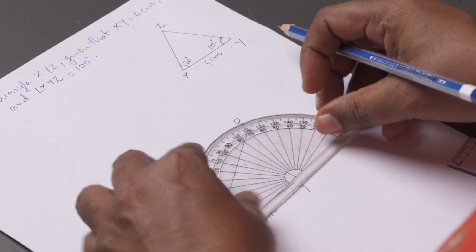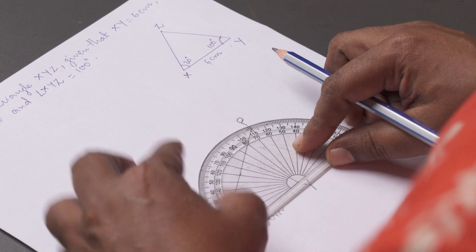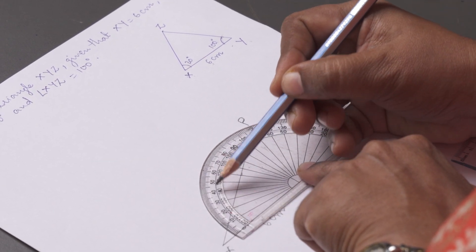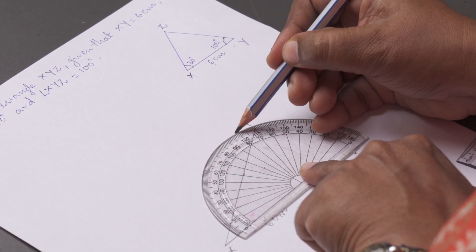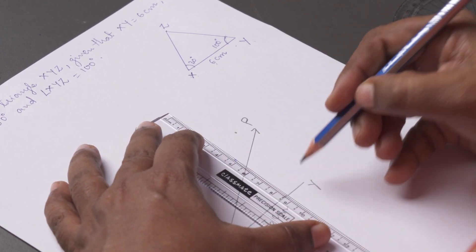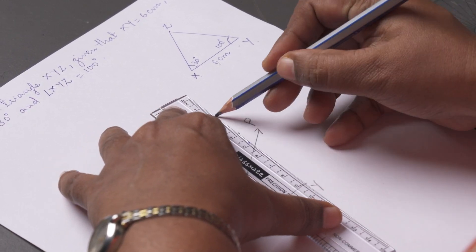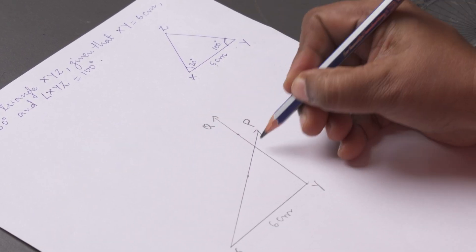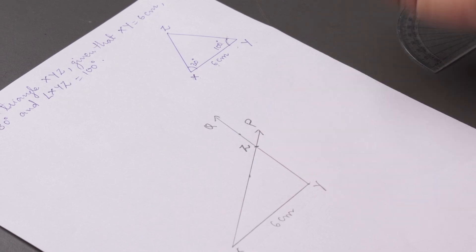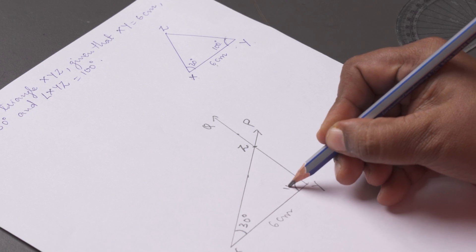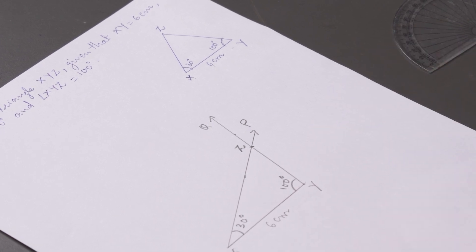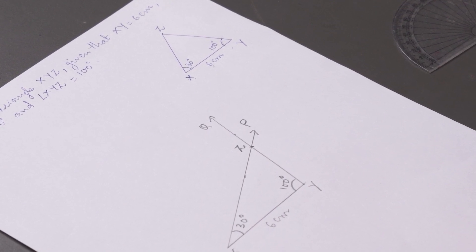At Y, draw an angle of 100 degrees. Take a protractor, place it at Y, and measure 100 degrees. At Y, draw a ray YQ making an angle of 100 degrees with XY. Extend both rays XP and YQ until they meet each other, and label the point of intersection as Z. XYZ is the required triangle.